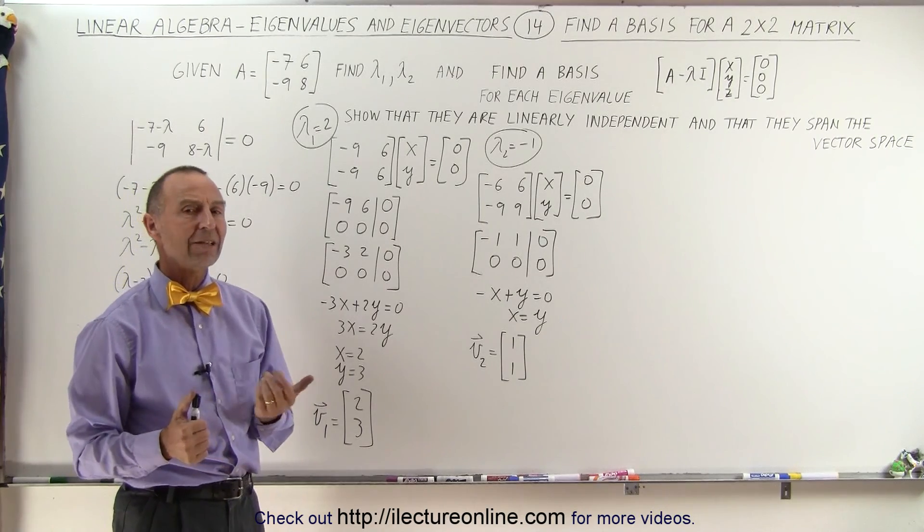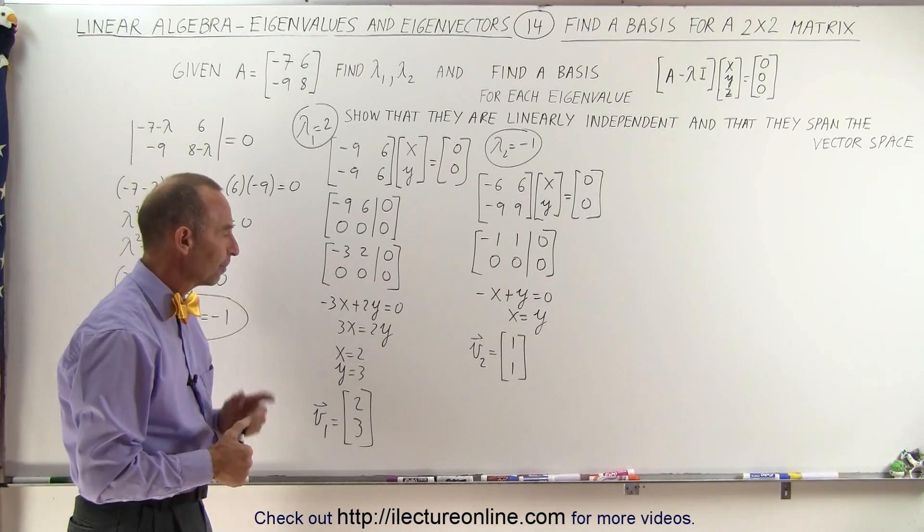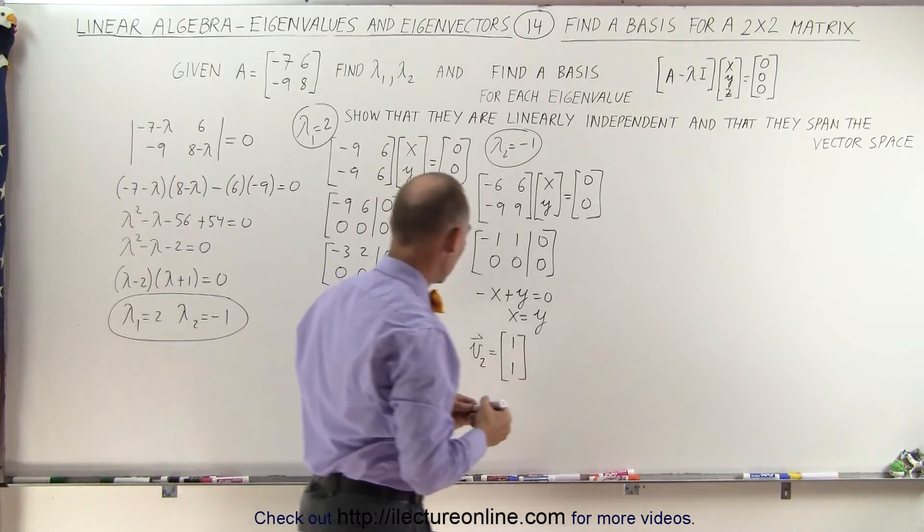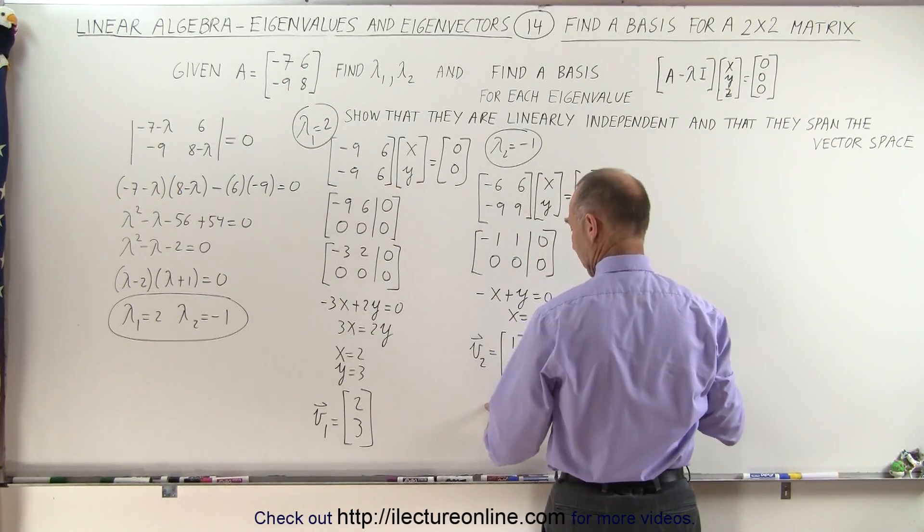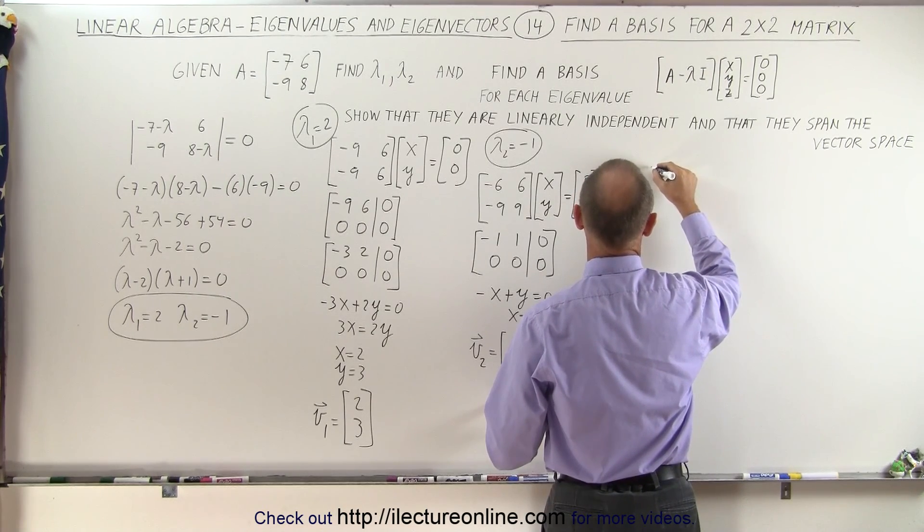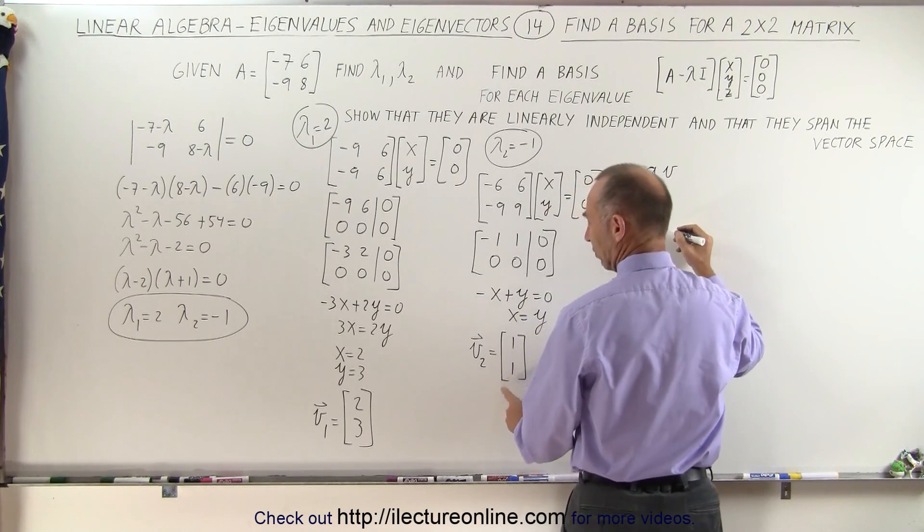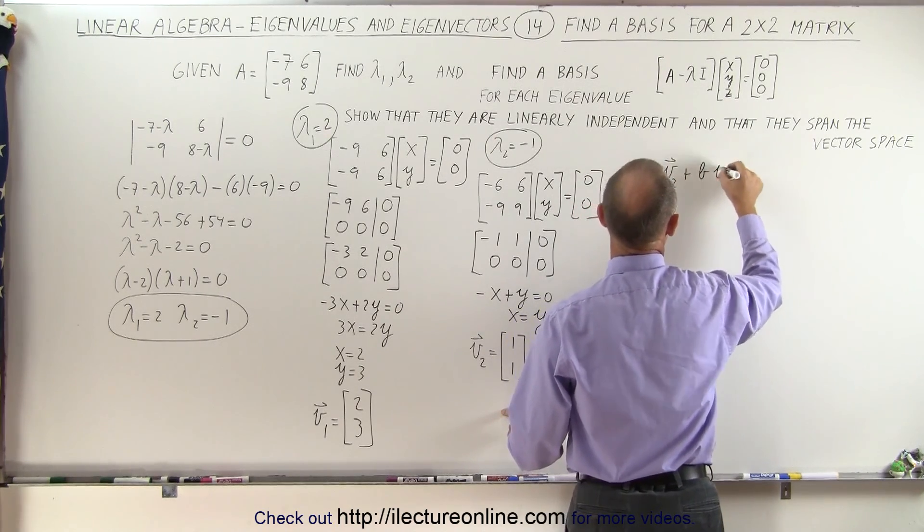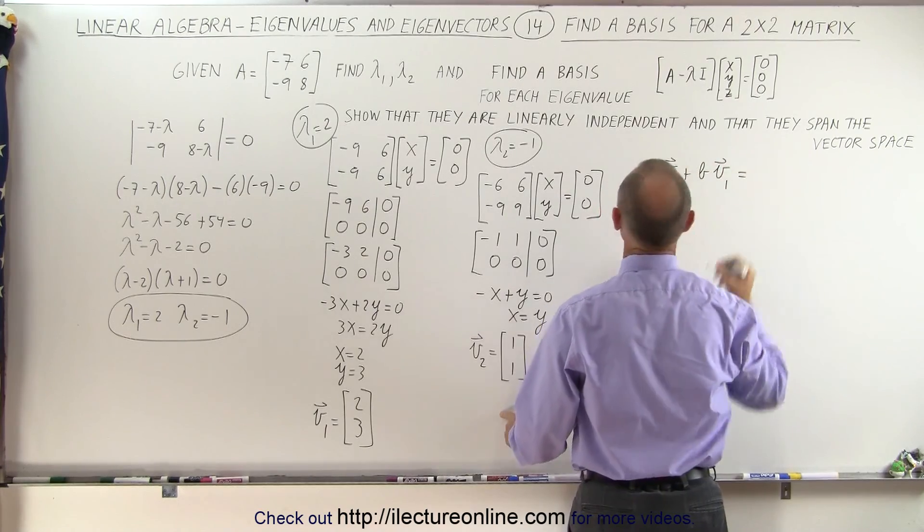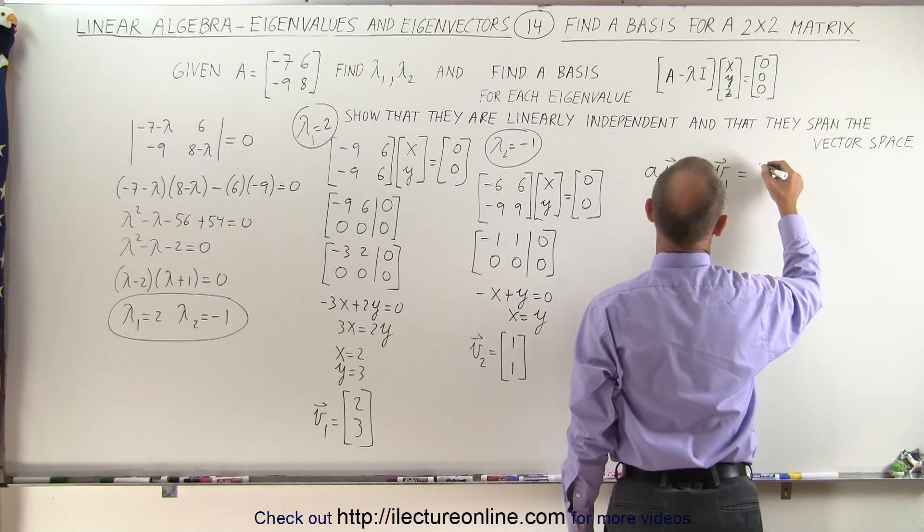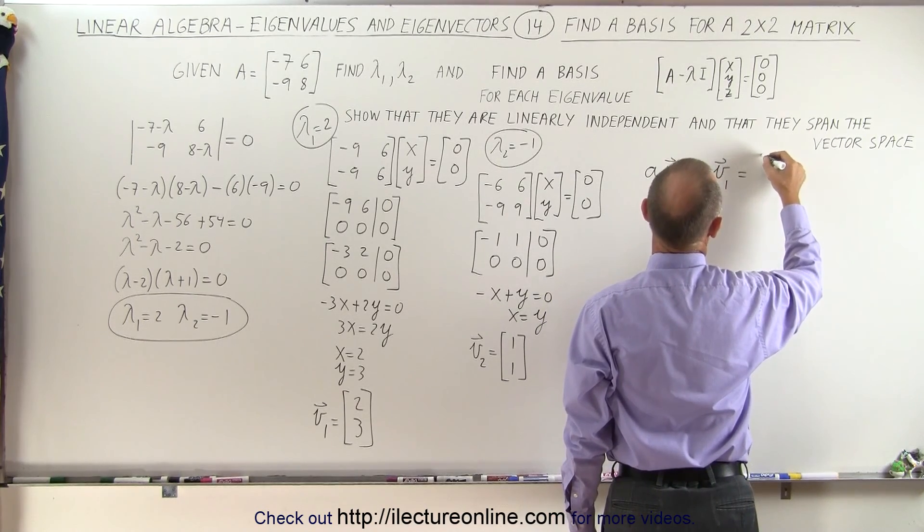But can we also show that they span the space? Now, the space consists of these two columns right here. In other words, if I take my two vectors, so let me take my second vector here, some constant times v2, I'm going to put this one first because that makes it a little bit easier, plus b times v1, that should equal the two columns of my original matrix. Well, let's start with the matrix 6 and 8.